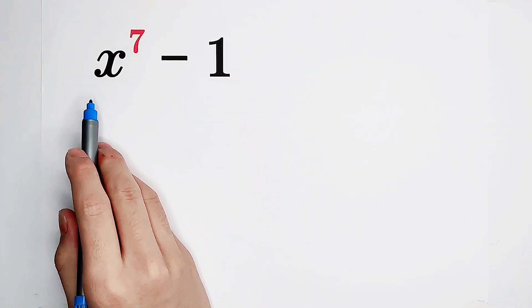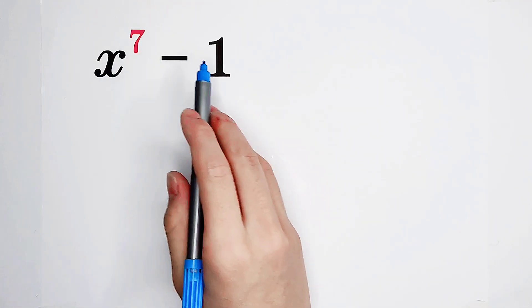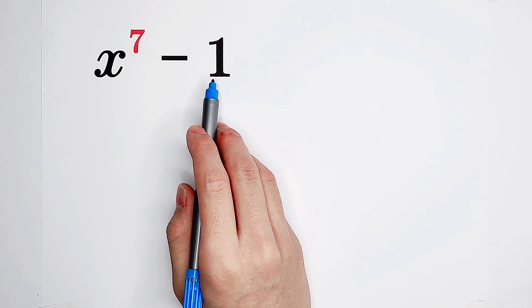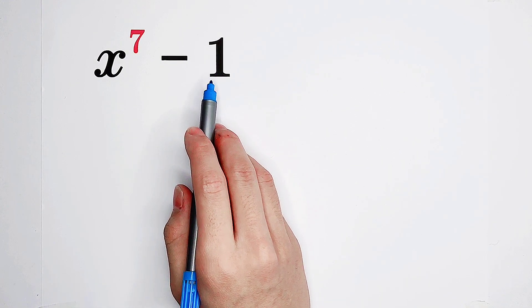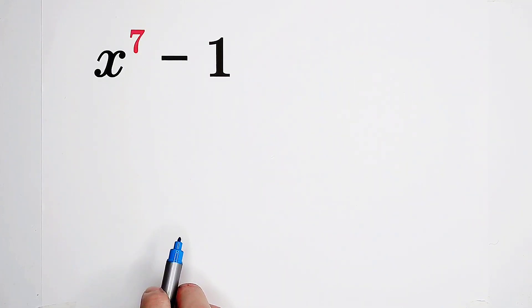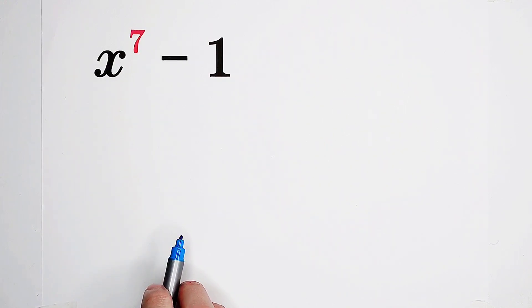Factorize x to the power of 7 minus 1, in case you don't know the formula. Now, this method is really, really fantastic, fabulous, and magnificent.